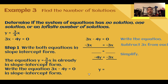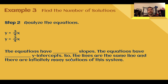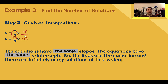Example three: find the number of solutions. Determine if the system of equations has no solution, one solution, or an infinite number of solutions. We have y equals three-fourths x and three x minus four y equals zero. We need to write both in slope-intercept form. Subtract three x from both sides to get negative four y equals negative three x, then divide both sides by negative four. This gives y equals three-fourths x. Now analyzing: I have the same slope, and neither equation shows a y-intercept — they're both at zero. Same y-intercepts. These lines are the exact same line, so this system has infinitely many solutions.